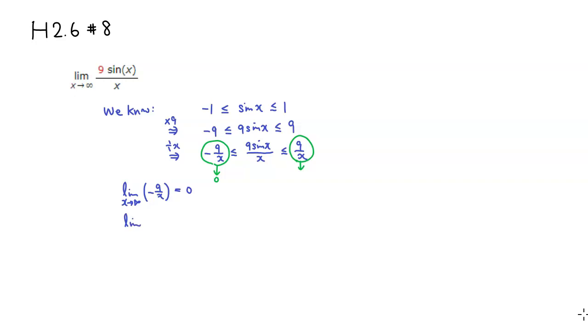And then if you take the limit of the biggest guy, which is just different by sine, so 9 over x, as x approaches infinity, it's going to approach 0 as well. So therefore, by squeeze theorem, the middle guy has to go to 0.